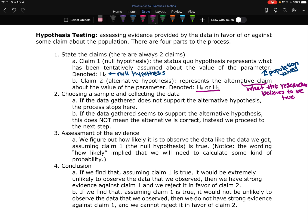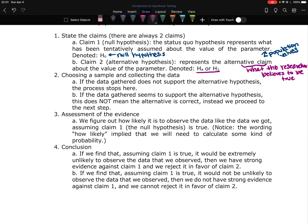And then the conclusion. The conclusion is also what we're going to be focusing on here. So steps one and two, mostly two, we focused on earlier. For the conclusion, if we find that assuming the null hypothesis was true, claim one, it would be extremely unlikely to observe what we observed, then we have strong evidence against claim one and we reject it in favor of claim two.